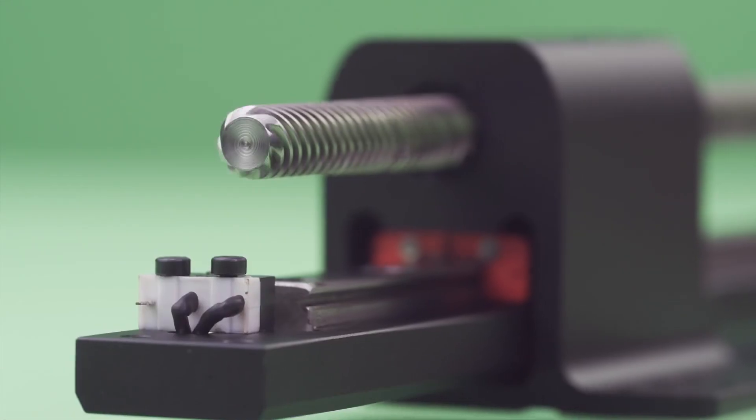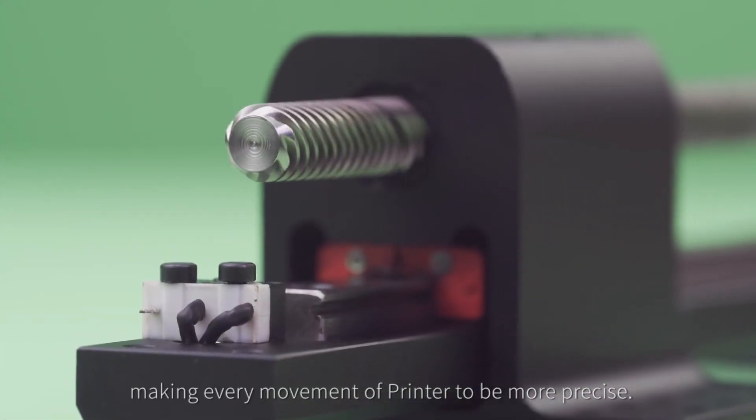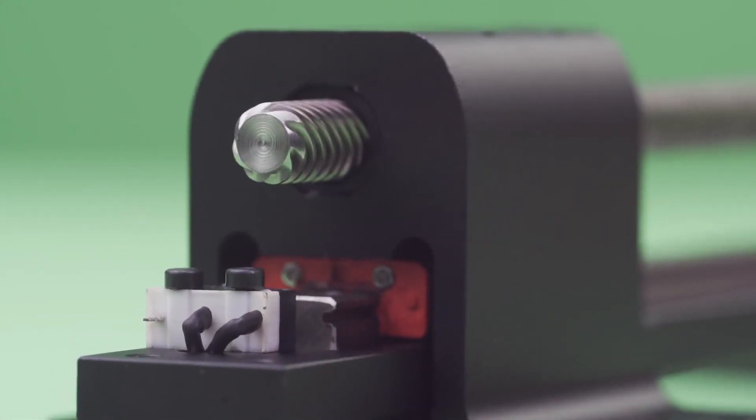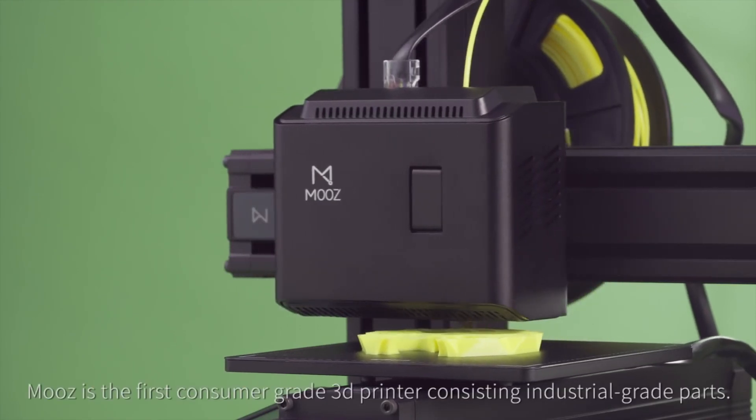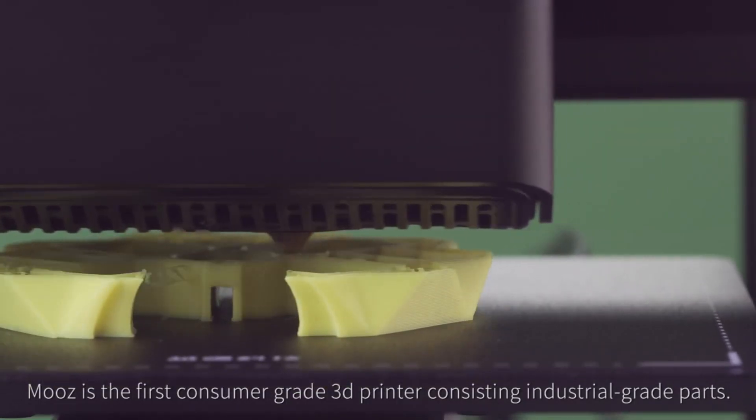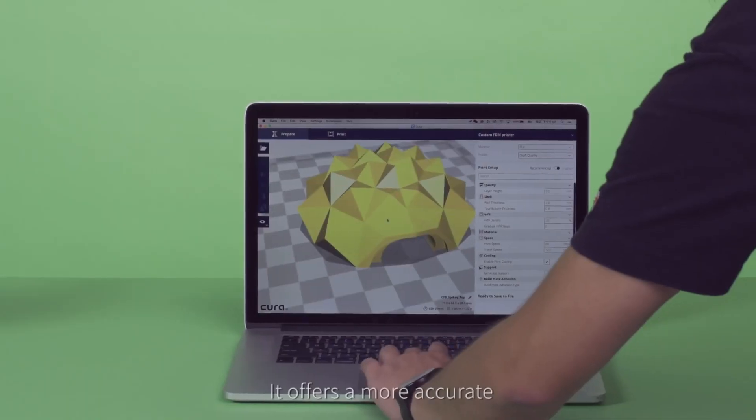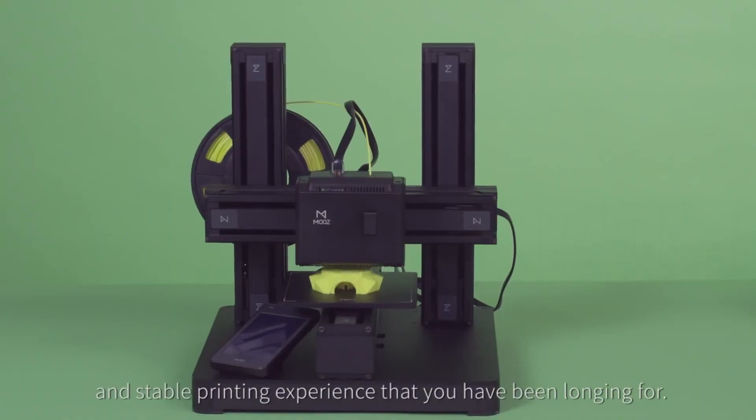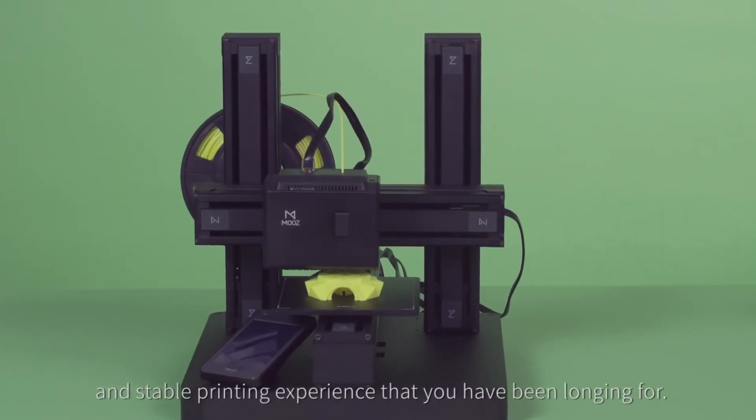Together with the high precision linear bearing, making every movement of printer to be more precise. Moose is the first consumer grade 3D printer consisting industrial grade parts. It offers a more accurate and stable printing experience that you have been longing for.